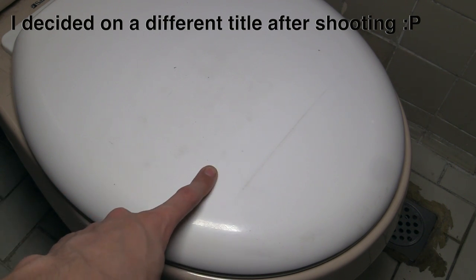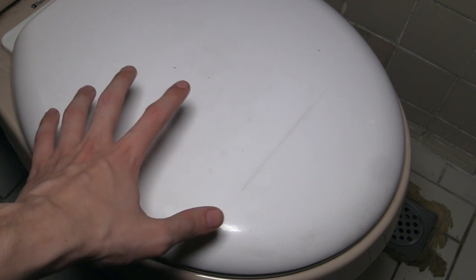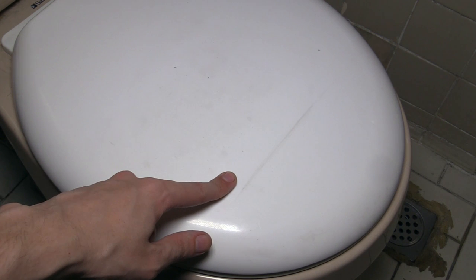Basically I have this toilet seat which is made of plastic and you can see this mark here and a couple of other marks, it just will not come off. So we're going to try something today, try and polish it with toothpaste and see if we can get these marks out.